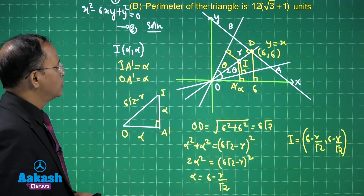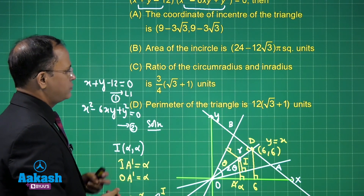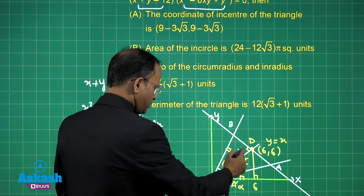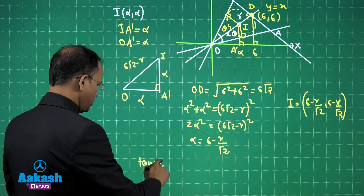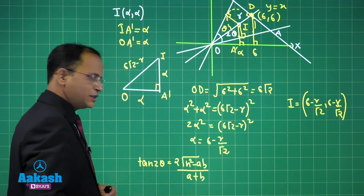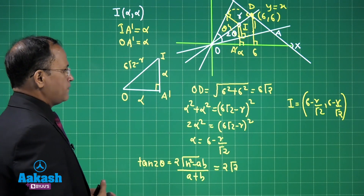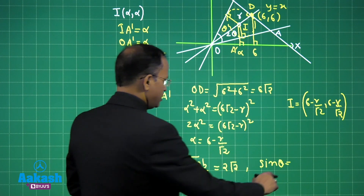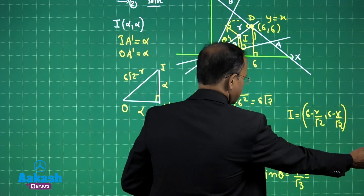Now we have the incenter. Next, we find the area of the incircle. For the area we need the inradius r. We know tan(2θ), which equals 2(s² − ab)/(a + b). In this case tan(2θ) = 2√2. From this we can find sin θ, which equals 1/√3.